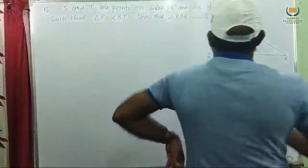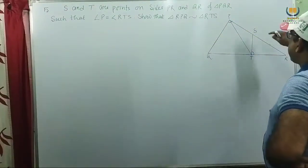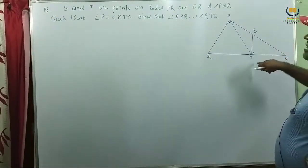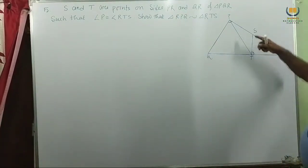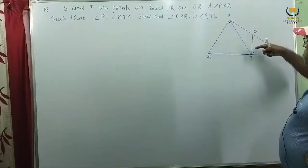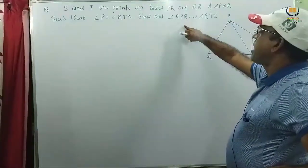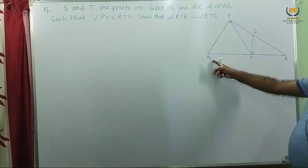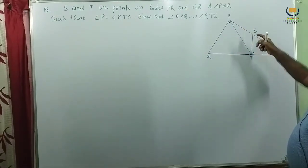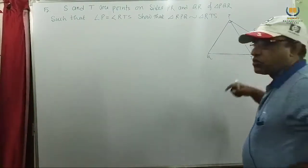We consider the figure. S and T are the points on sides PR and QR respectively. These two are the points on PR and QR, and also given angle P equals this angle RTS — these two angles are equal. Now we have to show that triangle RPQ and triangle RTS — the whole triangle and the small triangle — are similar.